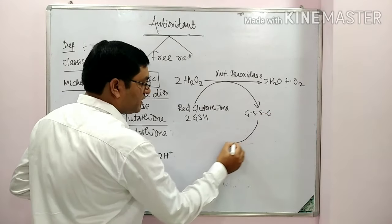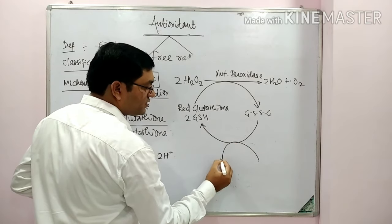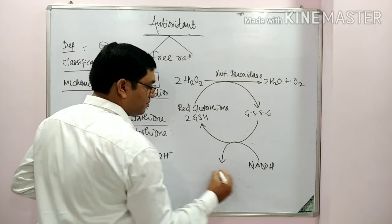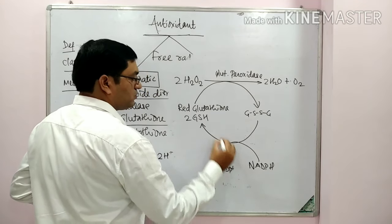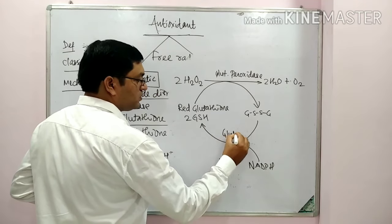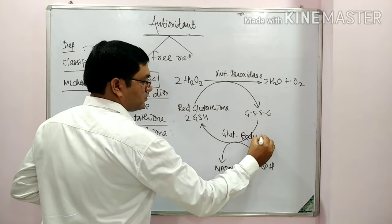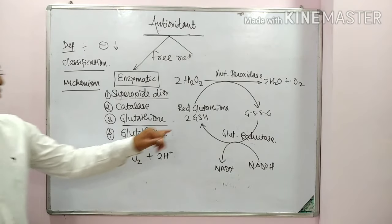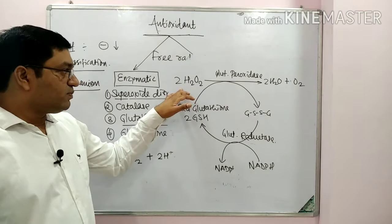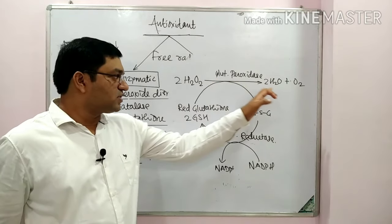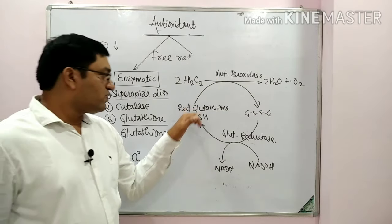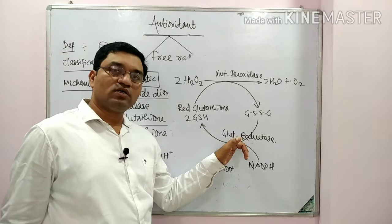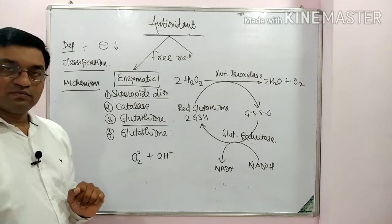The oxidized glutathione is regenerated back to its reduced form with the help of NADPH-dependent glutathione reductase. So the mechanism of glutathione peroxidase: hydrogen peroxide is converted into water, this reaction requires reduced glutathione, which is regenerated with the help of NADPH-dependent glutathione reductase.